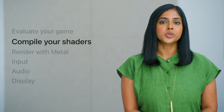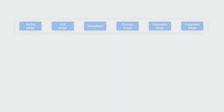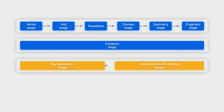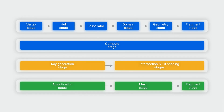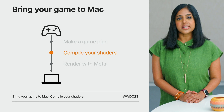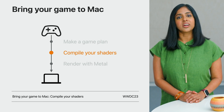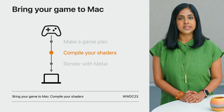Now that you've evaluated your graphics features and performance by running your existing Windows game, take that knowledge to port your shader pipeline. You can use the Metal Shader Converter tool to convert all your game's advanced shading pipelines, including geometry, tessellation, mesh, and ray tracing stages. Compiling your shaders is a deep topic on its own, so when you're ready, watch the second talk in the series, Compile Your Shaders.